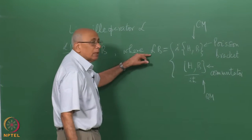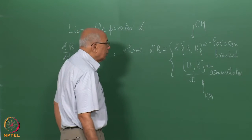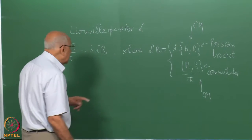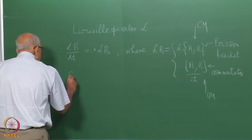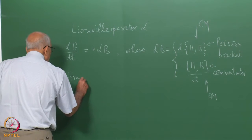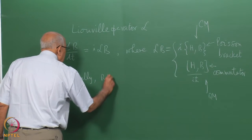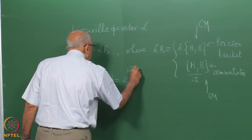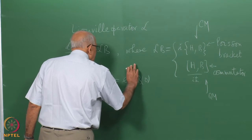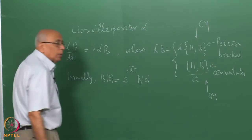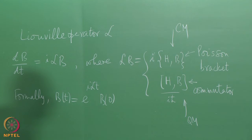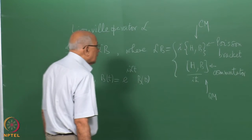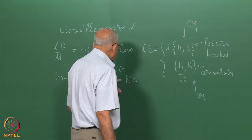That is the effect of this operation on any observable B. For explicit time dependence, formally B(t) is equal to the exponential e^{iLt} acting on B(0). So one has to exponentiate this Liouville operator, which is not always trivial to do. In quantum mechanics we know explicitly what this stands for.